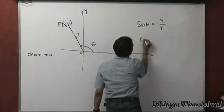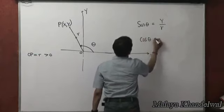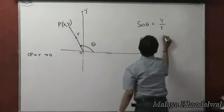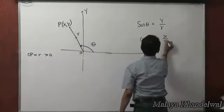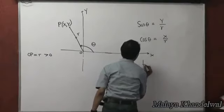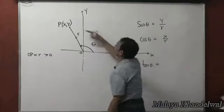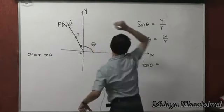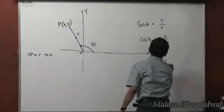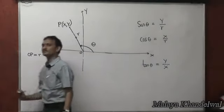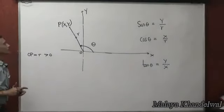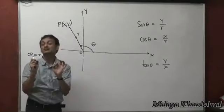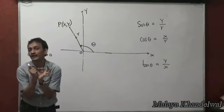We define cos theta as the x coordinate of the tip divided by r. And we define tan theta as the y coordinate of the tip divided by x. That is how trigonometric ratios are defined based on the coordinates of the tip of a rotating line of known length r.